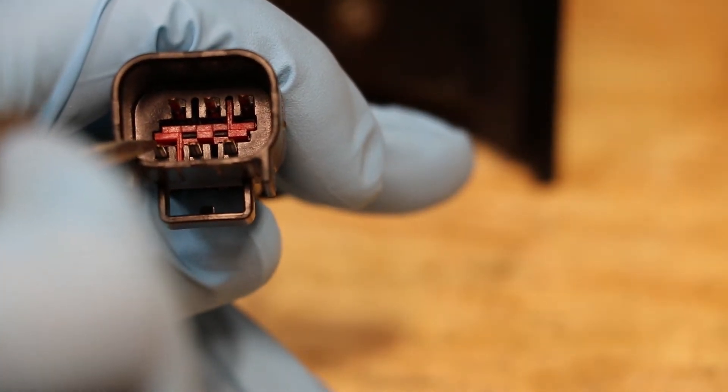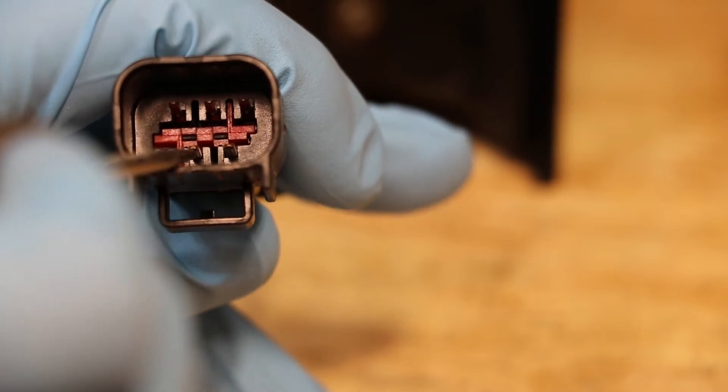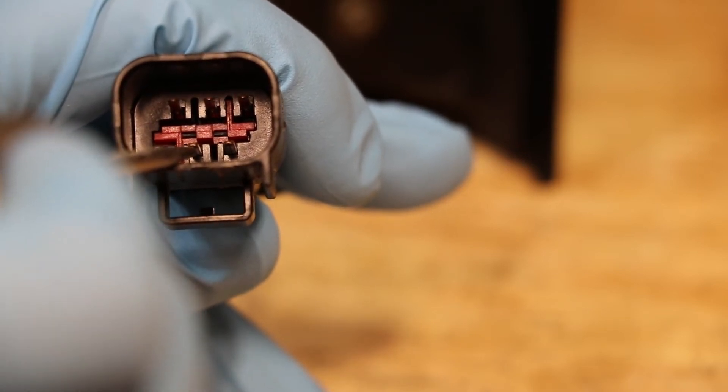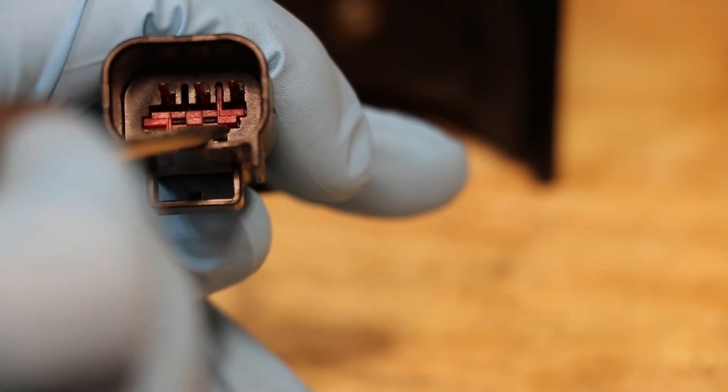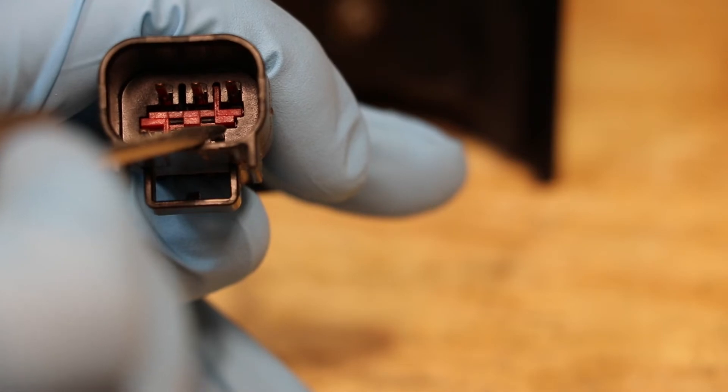On the second row, the first pin is the positive for the reverse light. The second pin is the positive for only the upper LED ring. The third is the positive that will operate both the upper and lower LED rings as well as the side.